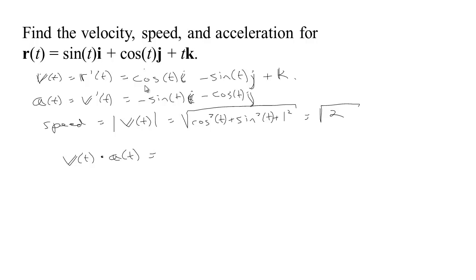the dot product of these two would be cosine t times minus sine t, and then multiply those together and you get minus cosine t times sine t. And then 0k and 1k, so 0 times 1 is 0. Notice that these cancel.